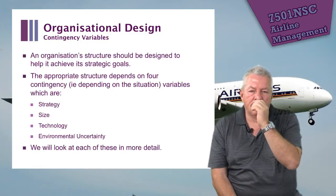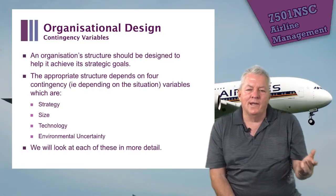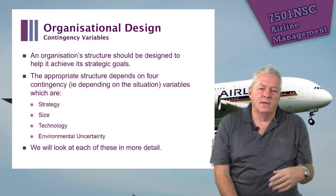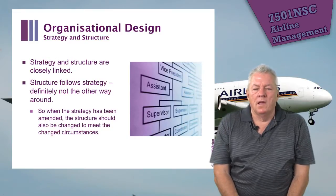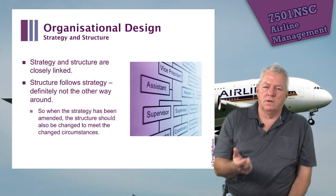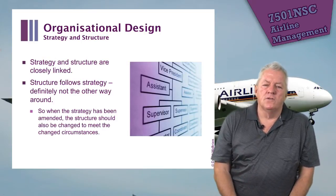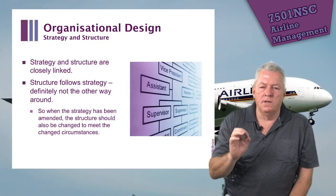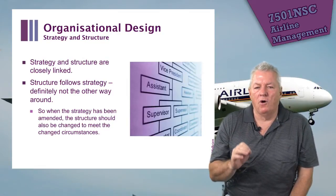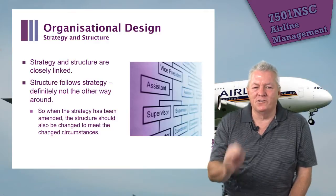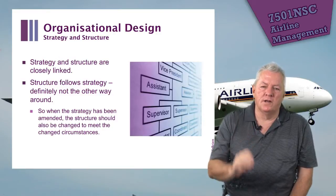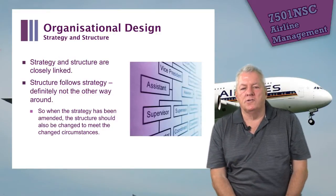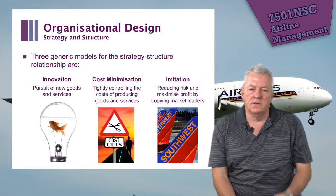Contingency variables in organizational design — contingency meaning depending on the situation — include strategy, size, technology, and environmental uncertainty. Strategy and structure are closely linked: structure follows strategy. A very important point is that when an organization changes its strategy, it must also change its structure. Structure always follows strategy, and when strategy is amended, structure should be changed to meet the changed circumstances.